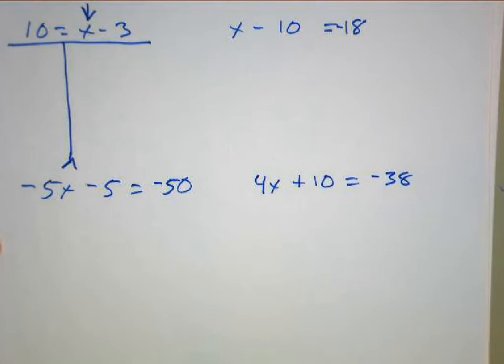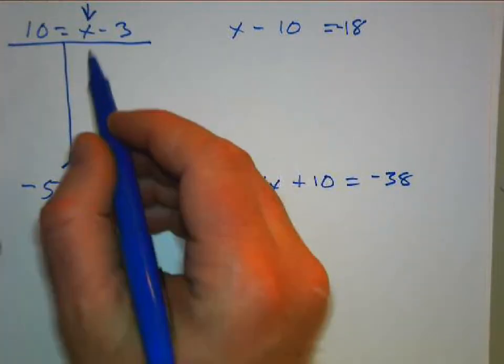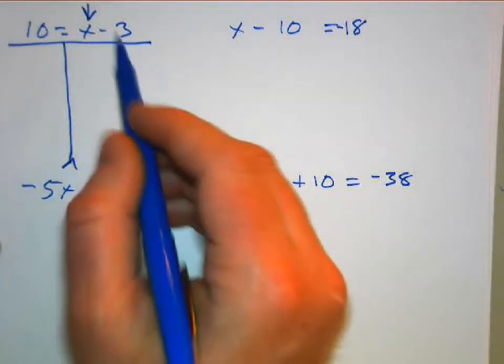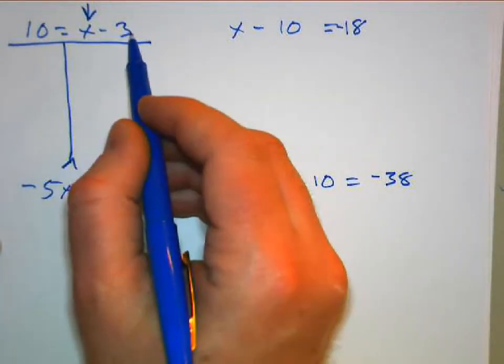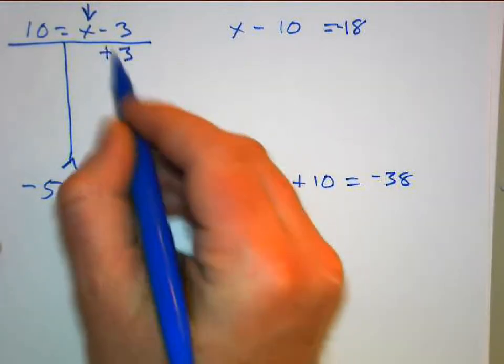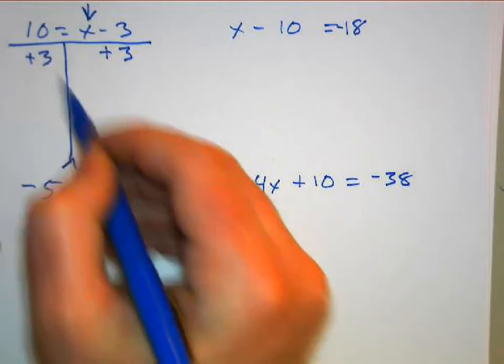What we're going to do is try and isolate X using addition and subtraction to get rid of these numbers. So we have X minus 3. What is the opposite of minusing 3? We're going to add 3. And if we add 3 to this side, we're going to add 3 to this side, which leaves me with X. X equals what's 10 plus 3? 13.